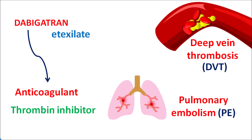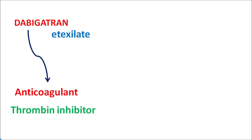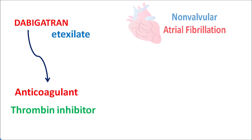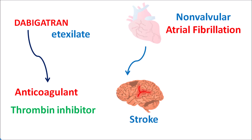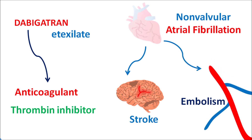This drug can also be used prophylactically in patients undergoing hip and knee surgery to prevent thrombotic events. Similarly, this drug can be used in non-valvular atrial fibrillation. In this condition, because of increased contraction of the atria, it may increase the risk of stroke within the brain, or increase embolic events which are fatal. Dabigatran etexylate can be given in non-valvular atrial fibrillation to control these thrombotic events.